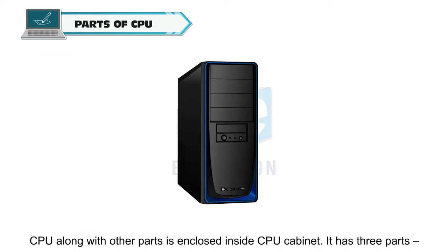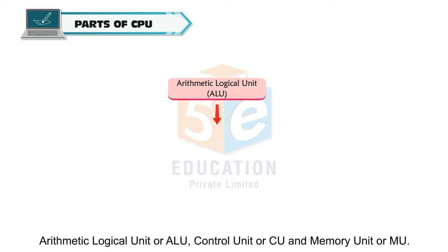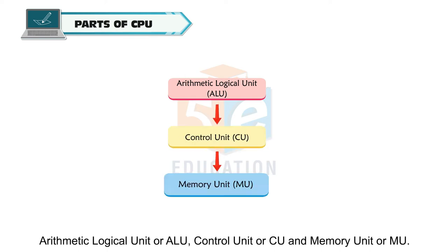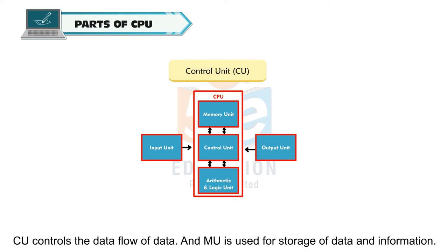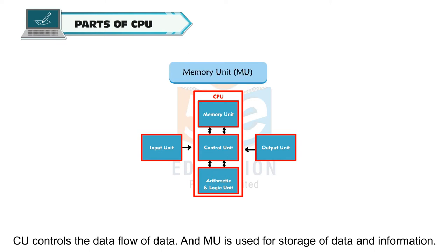CPU along with other parts is enclosed inside a CPU cabinet. It has three parts: arithmetic logical unit or ALU, control unit or CU, and memory unit or MU. ALU performs mathematical calculations and comparisons. CU controls the flow of data, and MU is used for storage of data and information.